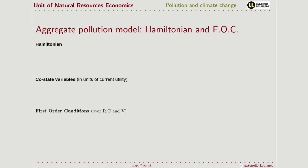We can now write the Hamiltonian of these dynamic problems. I invite you to pause the video and try to write the Hamiltonian by yourself. It is made by our objective functions, where we make explicit each variable and the independent variables it depends on. We have three state variables and therefore three equations of motion, which are the constraints of our optimization, each associated with a vector of co-state variables.